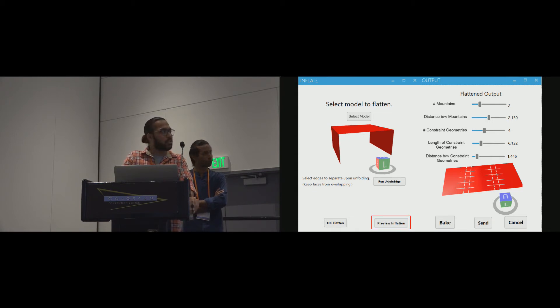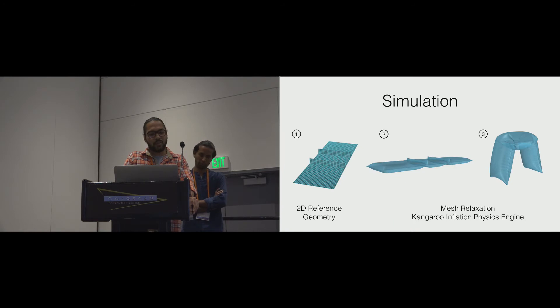And the user can then proceed to actually preview the inflation in the next step and visualize how the inflated object will look in the simulation tool that we have. To run the simulation, we use mesh relaxation techniques in Rhino and Grasshopper. We utilize Kangaroo's inflation physics engine to run the inflation based on the constraints that we provide here.